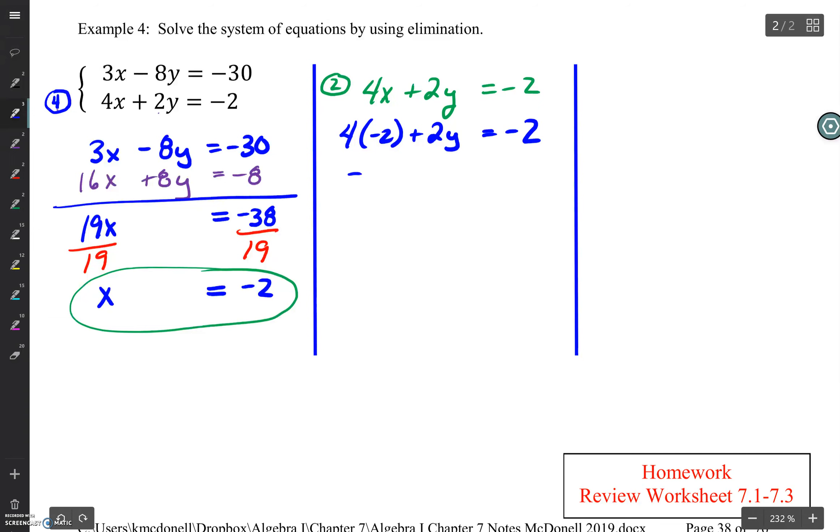Let's solve this equation. 4 times negative 2 is negative 8 plus 2y equals negative 2. What are we going to do to solve this problem? Hopefully you're saying, hey, let's add 8 to both sides. What's that going to give us? Well, negative 2 plus 8, that's positive 6. And obviously, you're going to know at this point we're dividing both sides by 2, so y equals 3.